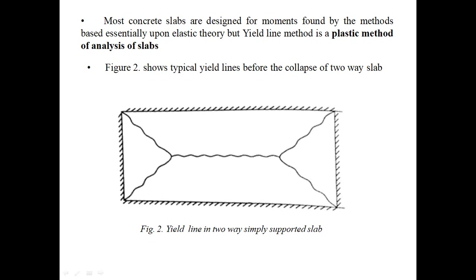Figure 2 shows typical yield lines before the collapse of a two-way slab. This is a rectangular two-way slab with all boundaries simply supported. After application of load and excessive loading, in the collapsed condition, cracks develop on the surface of the slab. This will be the pattern of cracks on the two-way slab, and these cracks are nothing but the yield lines.